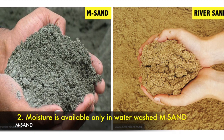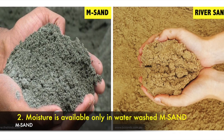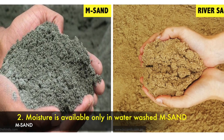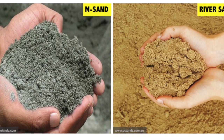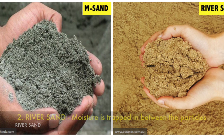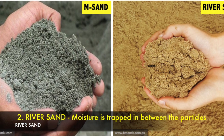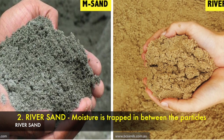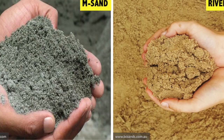Point 2 — M sand: Moisture is available only in water-washed M sand. River sand: Moisture is trapped in between the particles, which is good for concrete purposes.